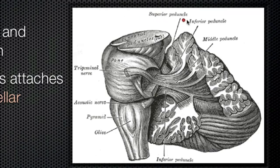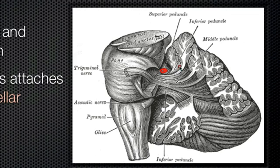You can see here we have the superior peduncle — this is pointing out one of the superior peduncles. And then we have the middle peduncle, so that would be these fibers here. And then we have the inferior peduncles, which would be beneath the middle peduncles — you can see one here and one over here. So we have these three pairs of peduncles: the superior peduncles, middle peduncles, and inferior peduncles, and those connect the cerebellum to the brain stem.